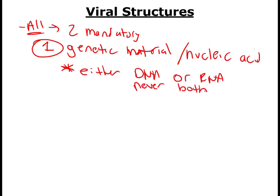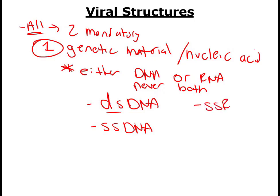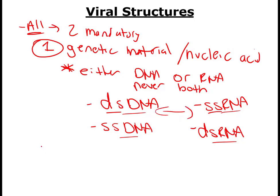A virus either has DNA or RNA — one or the other. DNA is normally double-stranded, but viruses can have double-stranded DNA or single-stranded DNA, which is unusual. Similarly, most RNA is single-stranded, but a virus could have single-stranded RNA or, very unusually, double-stranded RNA. Every single known virus has only one of these four types of genetic material, and this is important for how we group viruses.